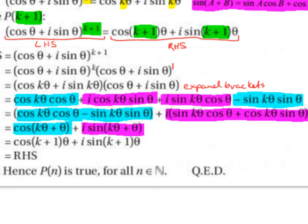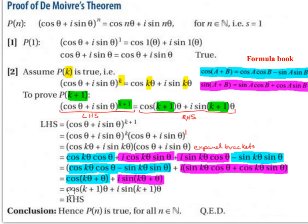cos(kθ + θ) can be rewritten as cos(k+1)θ by factorising out θ, and i sin(kθ + θ) can be rewritten as i sin(k+1)θ. This equals the right-hand side, which is cos(k+1)θ + i sin(k+1)θ. So we started with the left-hand side and showed that it equals the right-hand side.